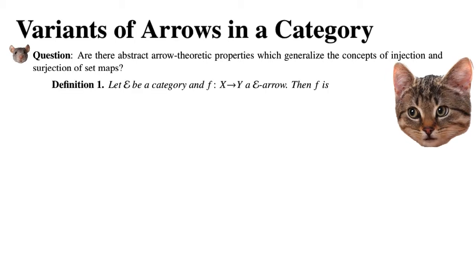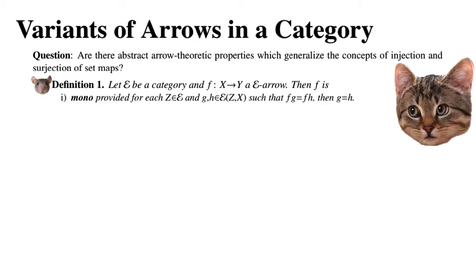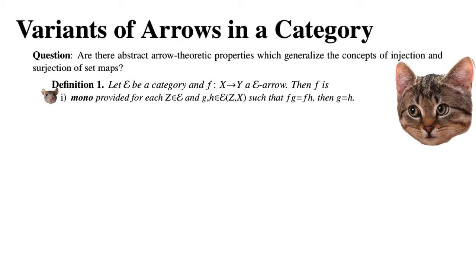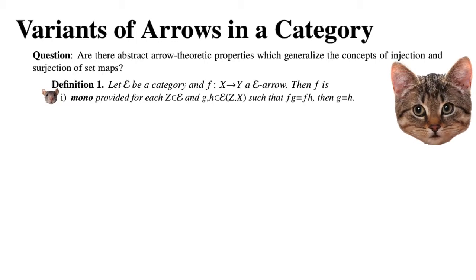Let E be a category and F: X → Y be an E-arrow. Then F is mono provided that for each object Z in E and for each pair of arrows G and H from Z to X such that FG = FH, then G = H. This just means that an arrow is mono if and only if it is left cancelable.